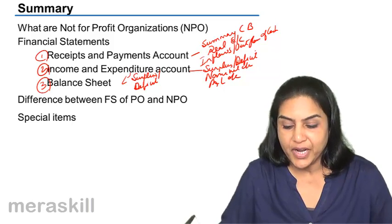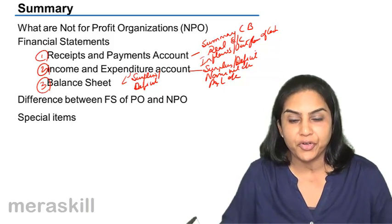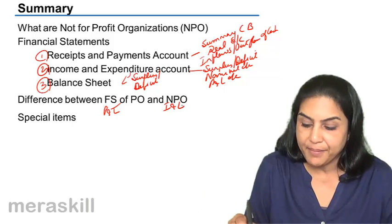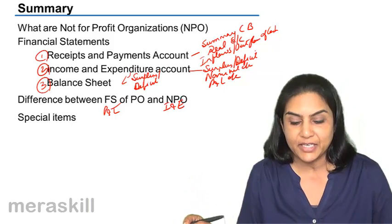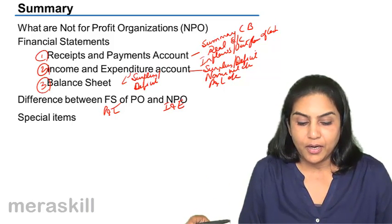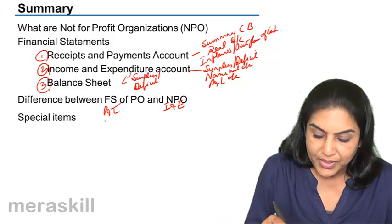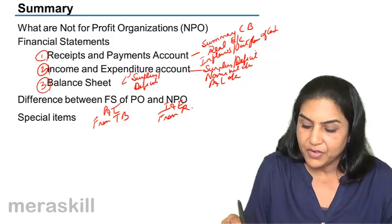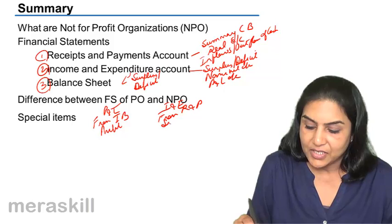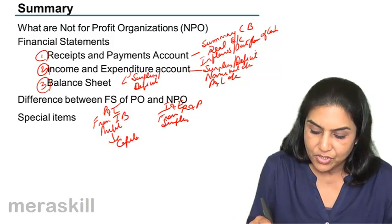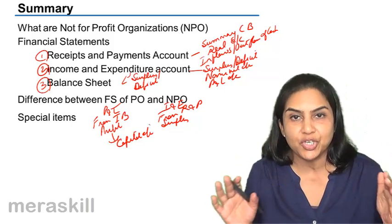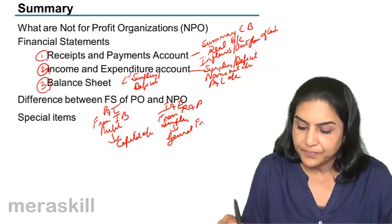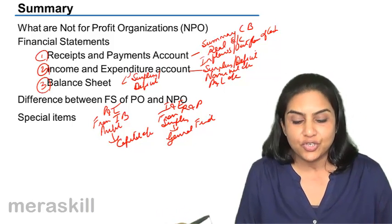What is the difference between the financial statements of a profit organization and a not-for-profit organization? Profit organizations prepare a profit and loss account from the trial balance, whereas NPOs prepare an income and expenditure account largely from the receipts and payments account. Profit organizations ascertain profit, while NPOs ascertain surplus. Profit is taken to the capital account or general reserve and becomes shareholders' equity or owner's equity, whereas surplus is added to the fund. There is no capital and no distribution of profit in an NPO.